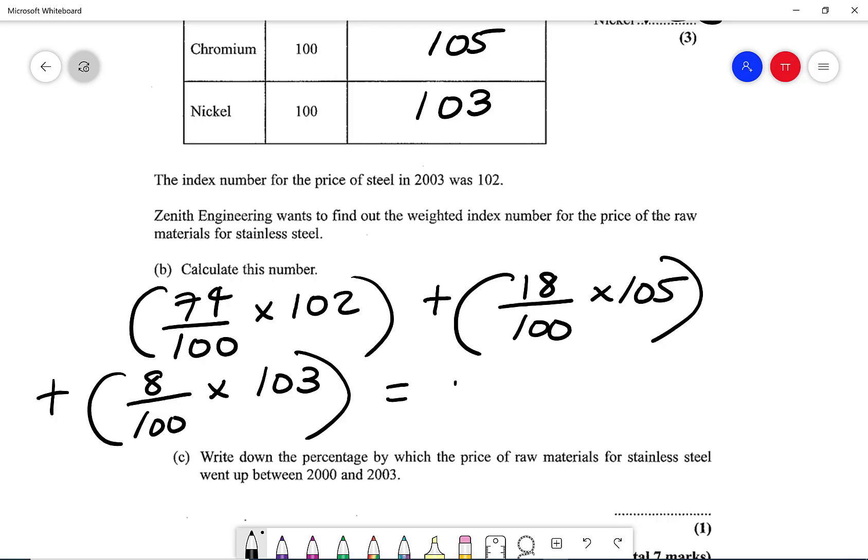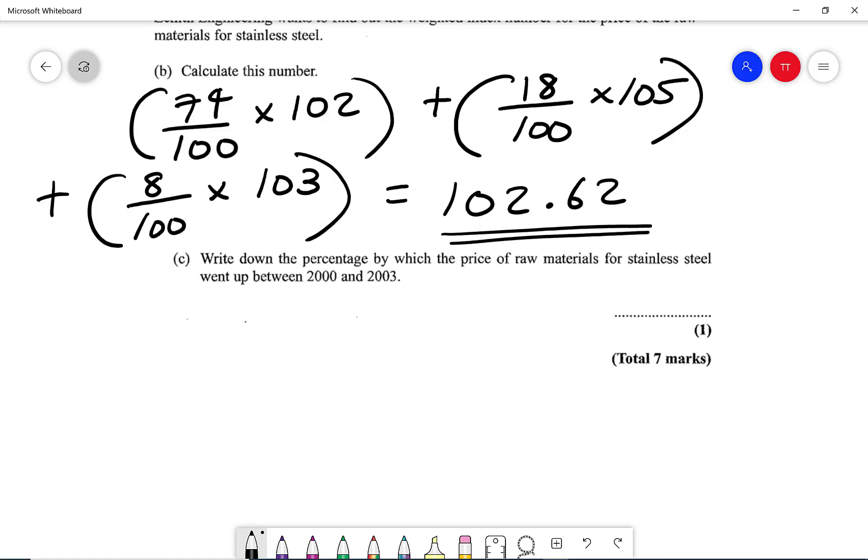And then on my calculator, that's going to give me 102.62. And then it says, part C, write down the percentage by which the price of raw materials for stainless steel went up between 2000 and 2003. So I now know what this weighted index number is. It's 102.62 in 2003. So it's going to be 102.62 minus what it was originally, which is 100, over the original times by 100%.